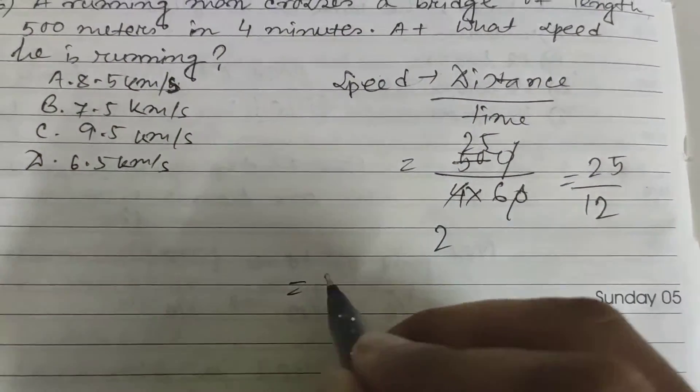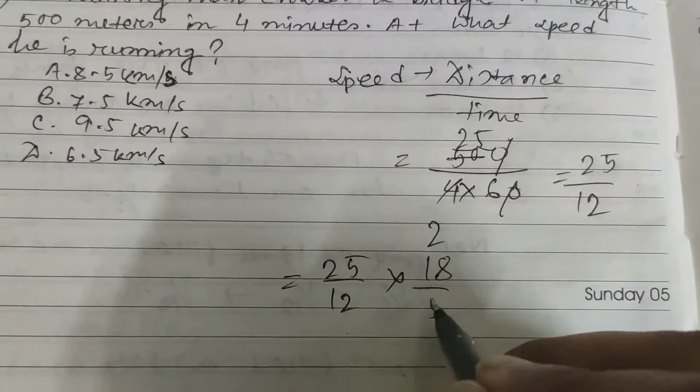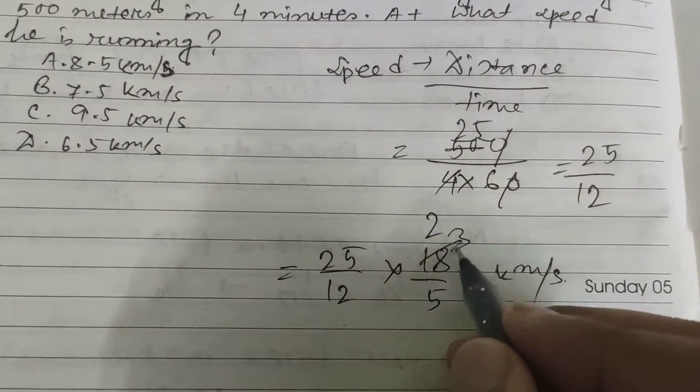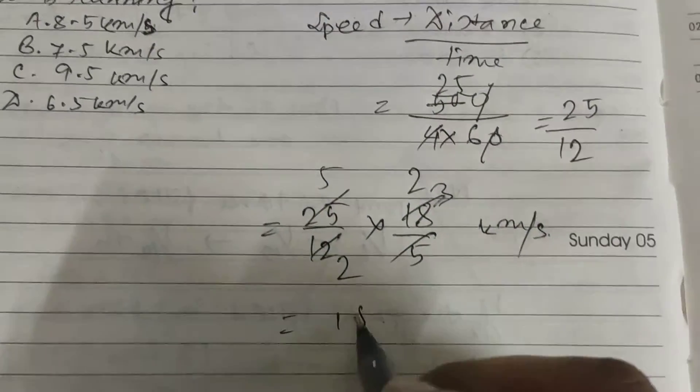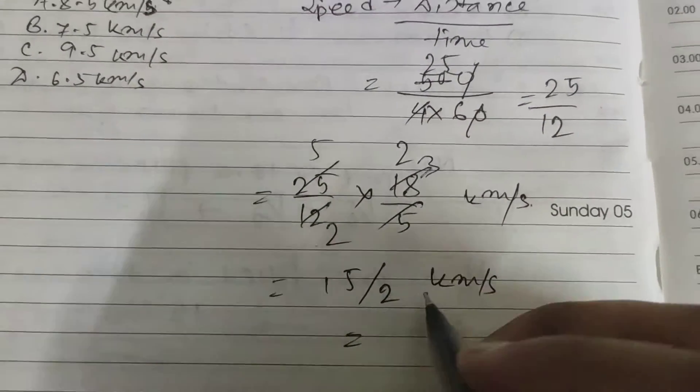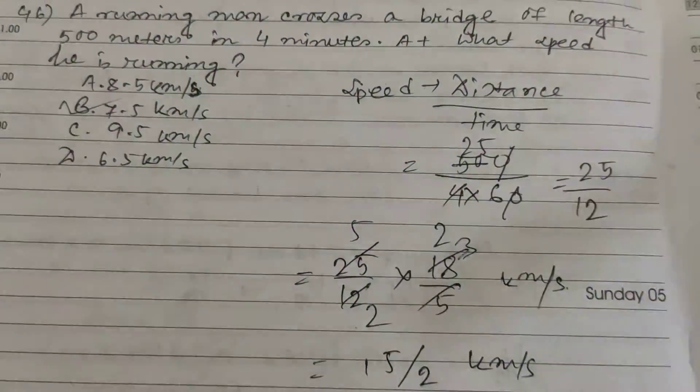So 25 by 12 multiplied by 18 by 5 gives you kilometer per hour. This equals 15 by 2, which is 7.5 kilometers per hour. So B is your right choice.